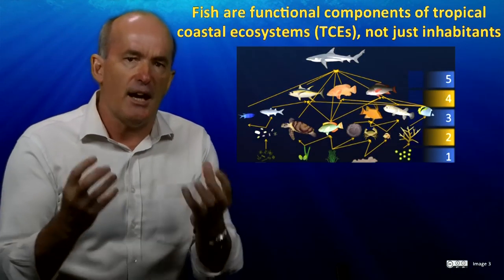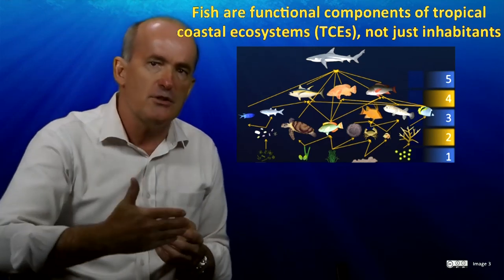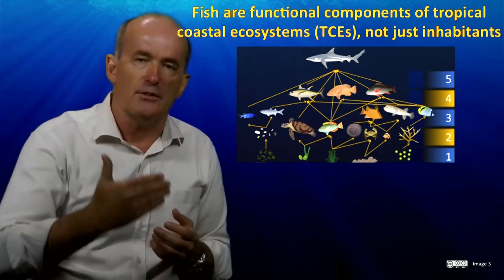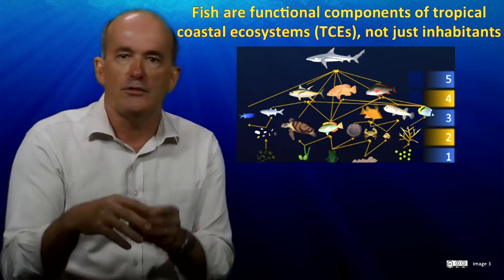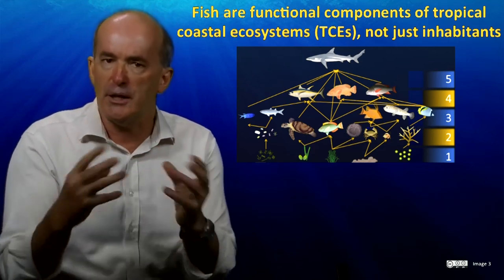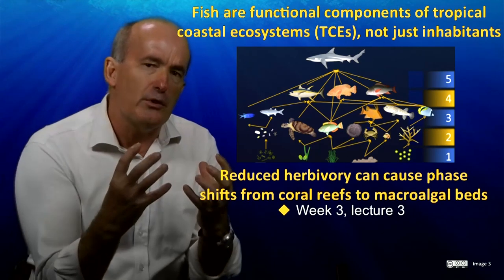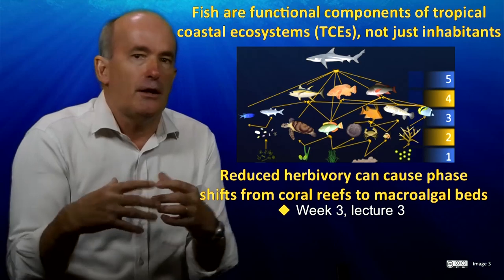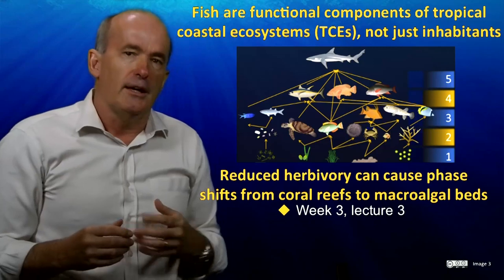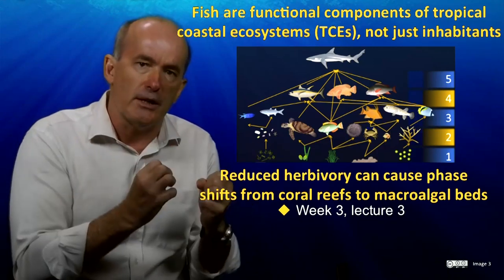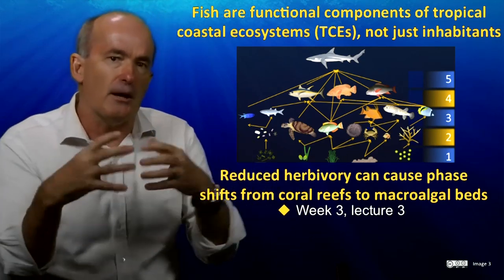We saw how fish and other animals are an integral part of coral reef ecosystems and we delved into how those species and organisms interact with each other. We built marine food webs and saw the intricate relationships between predators and their prey. We discovered how the grazing by herbivores, like parrotfish, is so important for allowing coral reefs to remain in a coral-dominated state, and how fishing can reduce herbivory and cause coral reefs to undergo a phase shift and become overgrown by macroalgae.